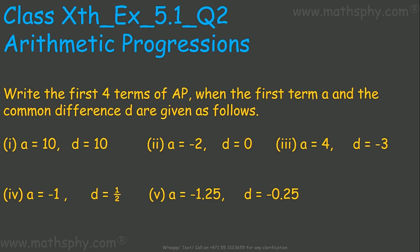This question says: write the first four terms of arithmetic progressions when the first term A and the common difference D are as follows. We have 5 questions to solve where A and D are given, and I have to write arithmetic progressions up to four terms.